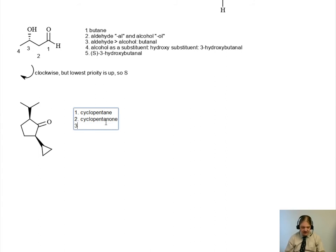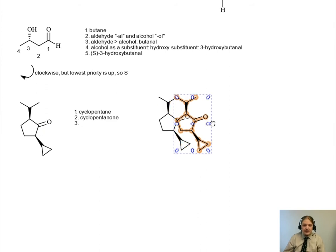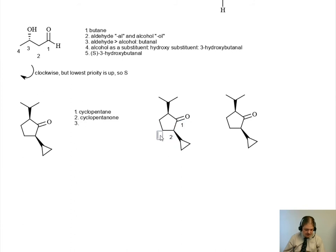Alright, but now we need to figure out how to number it. I'm going to make a copy of this structure, because there are two different ways that we could number this structure. The ketone is always going to be at one, but we could number it clockwise so that the cyclopropyl group gets the lower number. Or we could number it counterclockwise so that the isopropyl group gets the lower number.